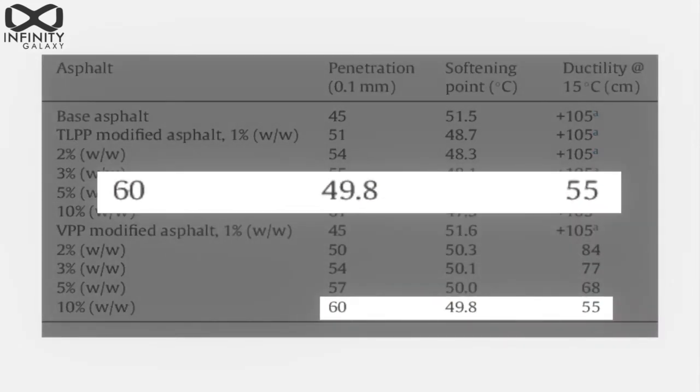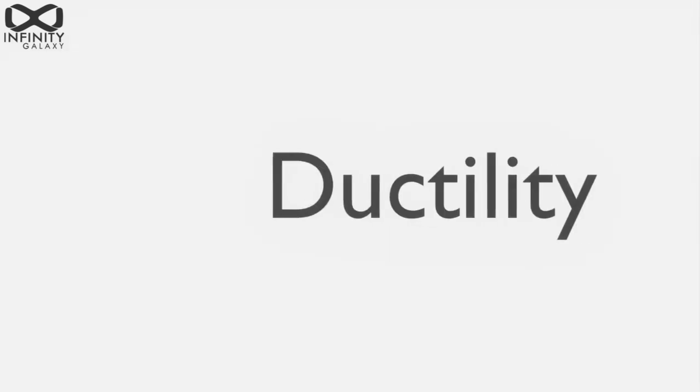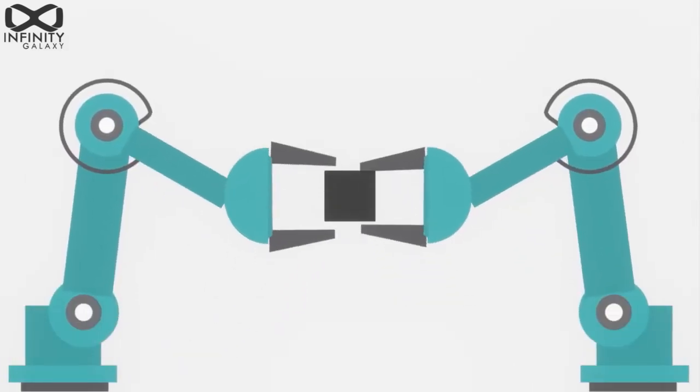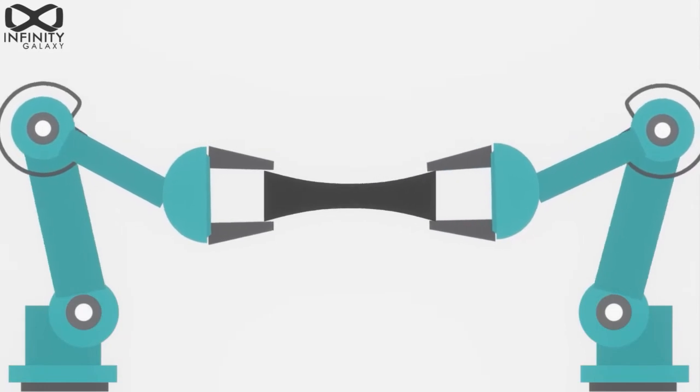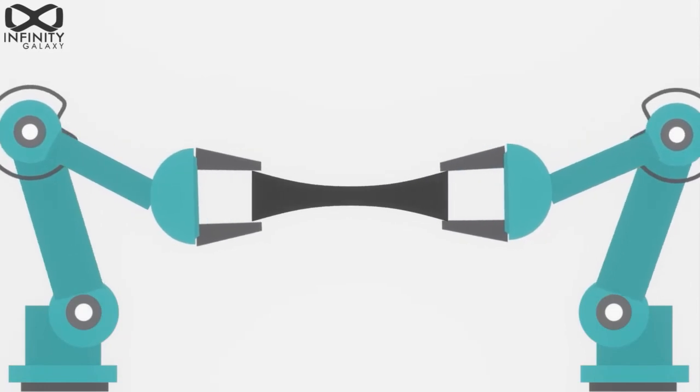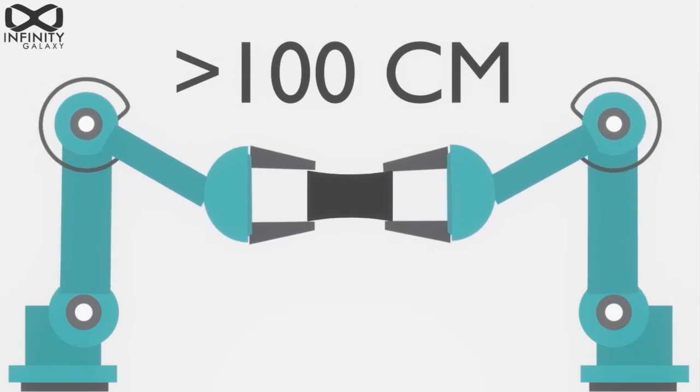Ductility: This test reveals the amount of elasticity of bitumen. The minimum elasticity for penetration grade bitumen is 100 centimeters. It is necessary to consider the elasticity of the bitumen to prevent asphalt deformation.